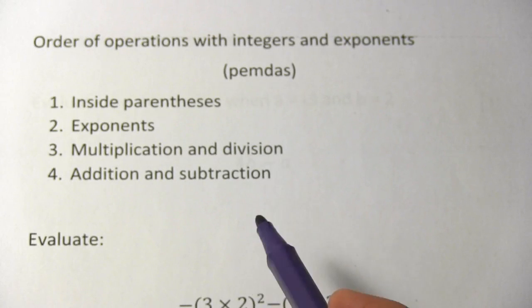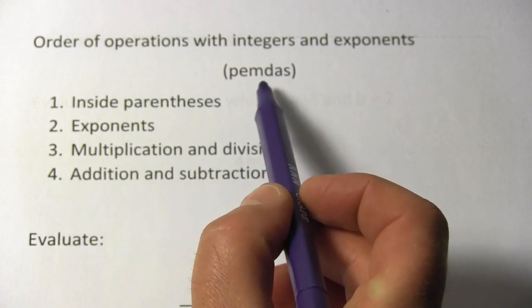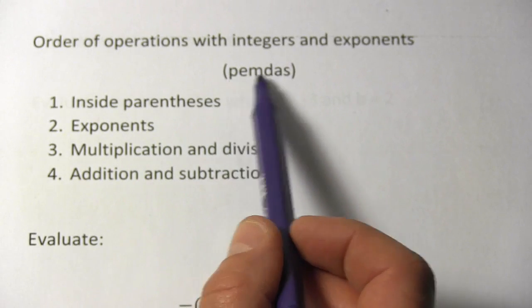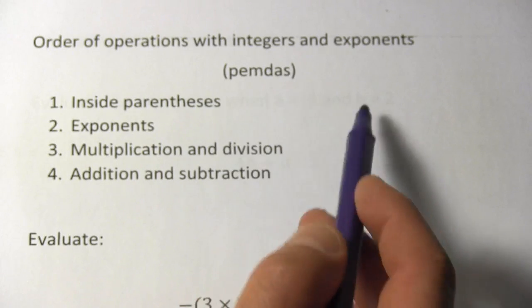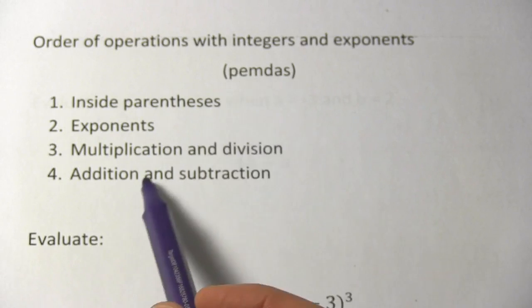In these problems we are dealing with the order of operations including things like parentheses and exponents. Maybe you already know that multiplication and division have to come before addition and subtraction when you're applying the order of operations. Well this handy acronym PEMDAS adds in the parentheses, that's what the P stands for, and the exponents.